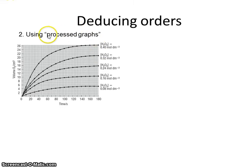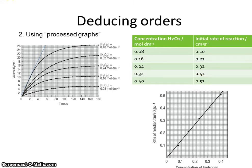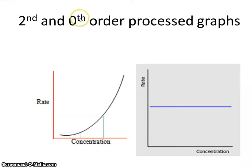Now we come to the second method for deducing order: using graphs. Here we use processed graphs obtained from progress curves. By plotting tangents from each curve, we can work out rates at different concentrations, giving us a table of data. We then plot a processed graph of rate against concentration. The result is a straight line graph, indicating a proportional relationship — a clear indication that the reaction is first order with respect to hydrogen peroxide.